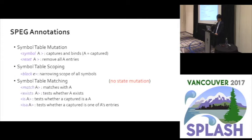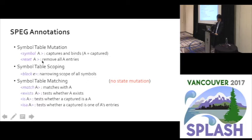You might wonder whether too many annotations are not good. Don't worry — here is a list of all SPEG annotations. These annotations are classified into three categories: symbol table mutation, symbol table scoping, and symbol table matching — which involves no state mutations.